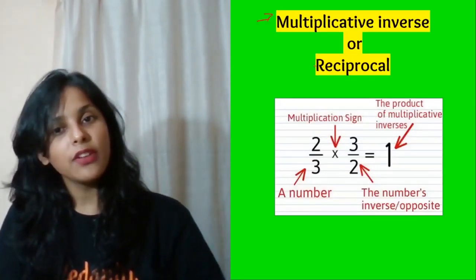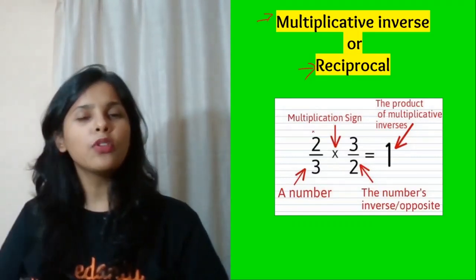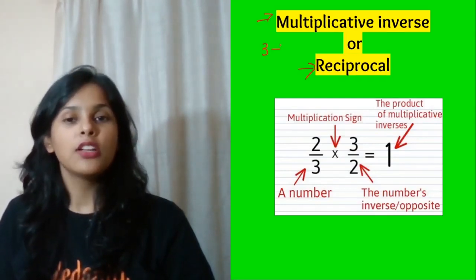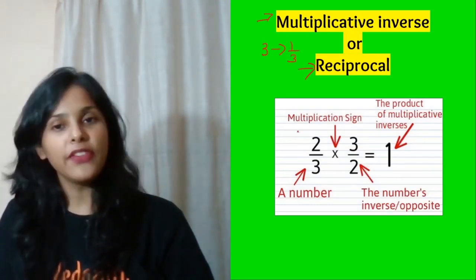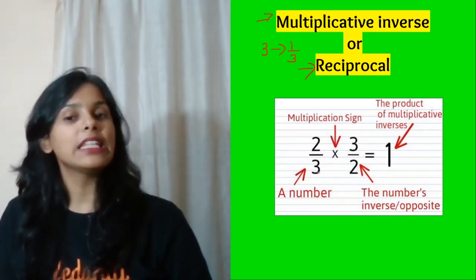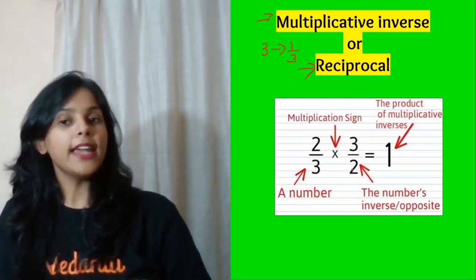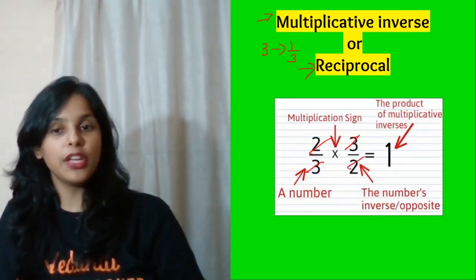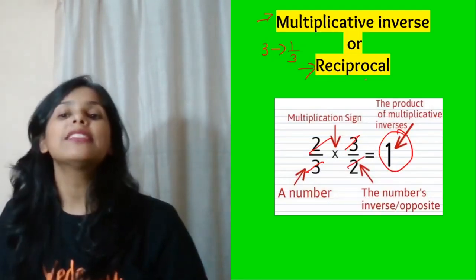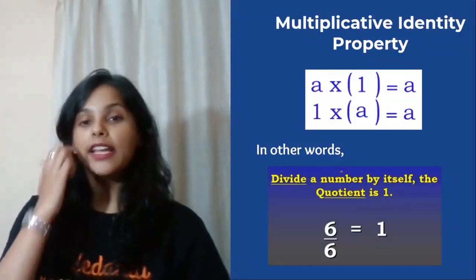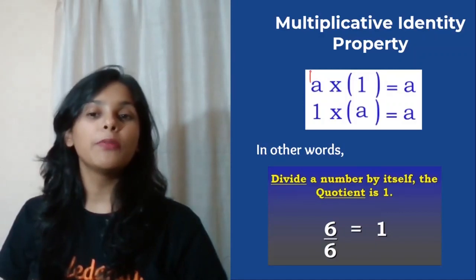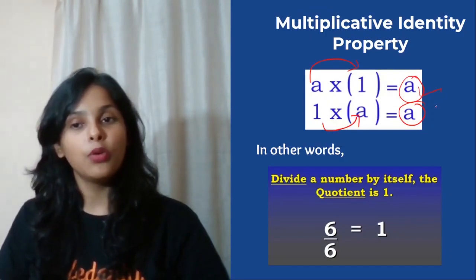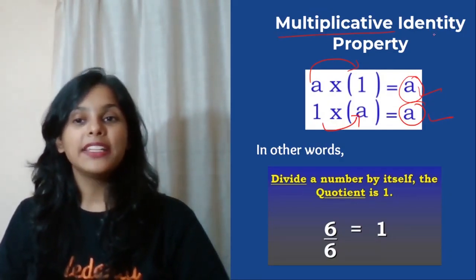Multiplicative inverse, or reciprocal, means flipping the number. For example, the reciprocal of 3 is 1 by 3, and the reciprocal of 2 by 3 is 3 by 2. When you multiply a number by its reciprocal you get 1 — so 2 by 3 times 3 by 2 is 1. Multiplicative identity means when you multiply any number by 1, you get the same number.